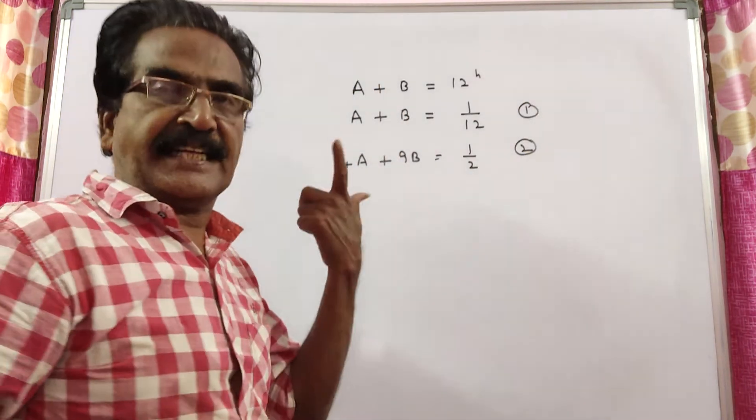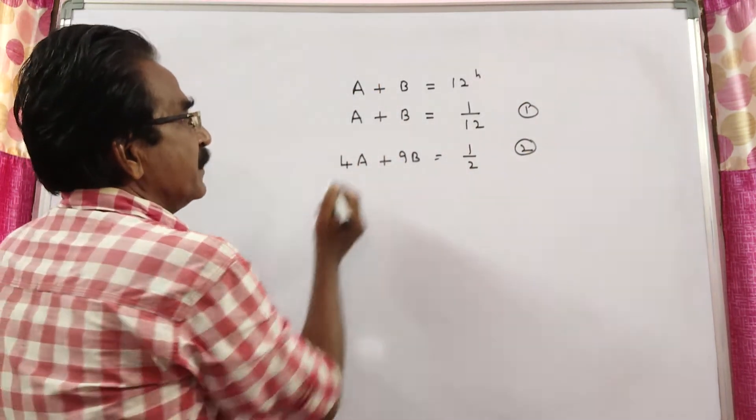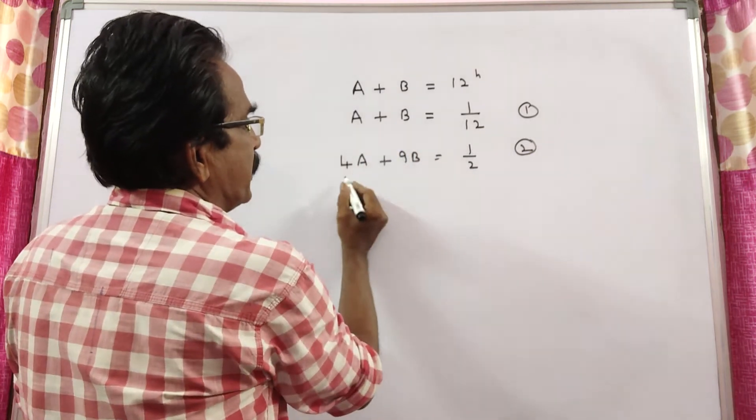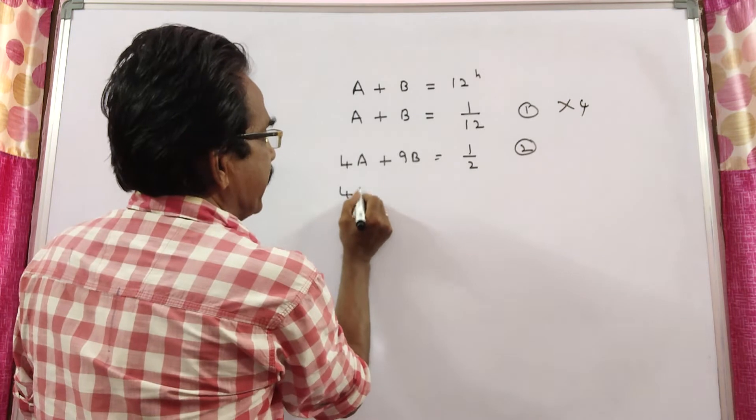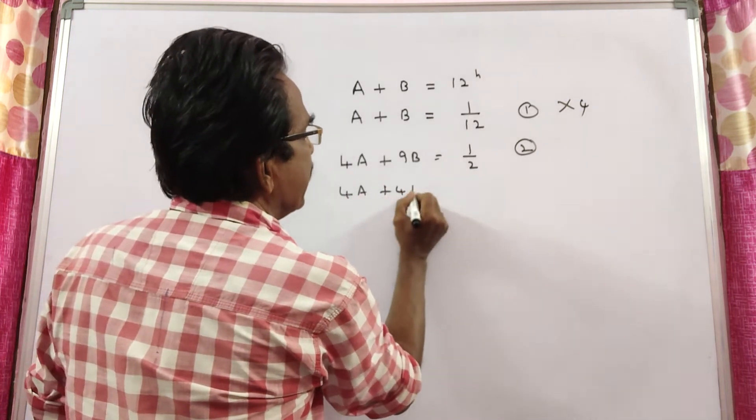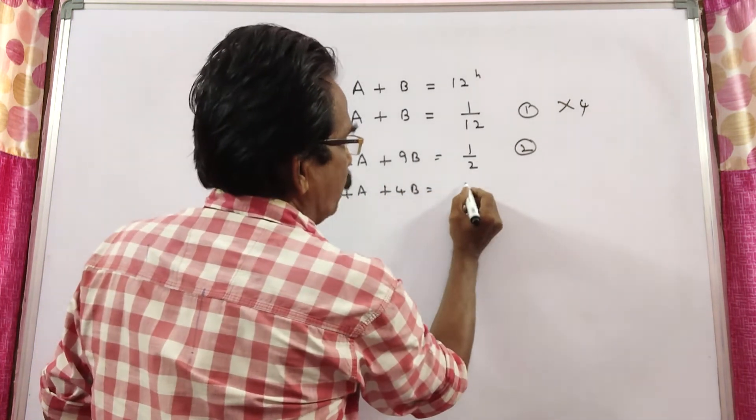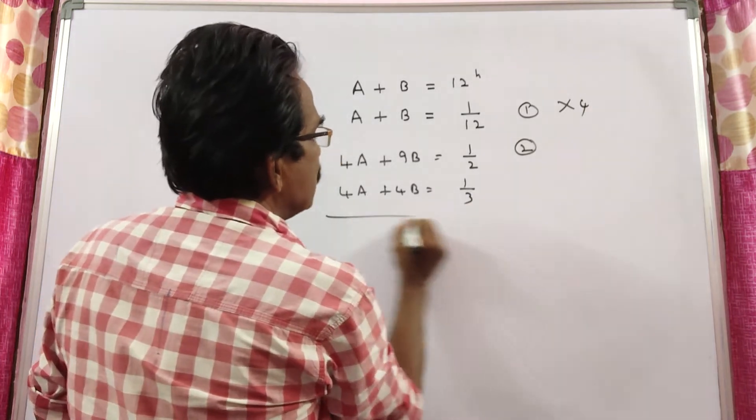Let us solve these two equations for getting A and B. I am multiplying the first equation by 4. 1 into 4. 4A plus 4B is equal to 4 into 1 by 12, which is 1 by 3.